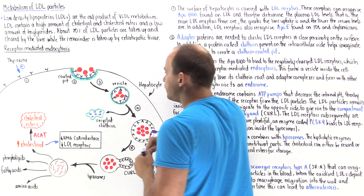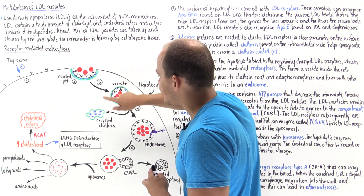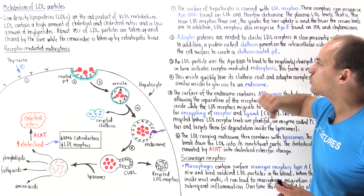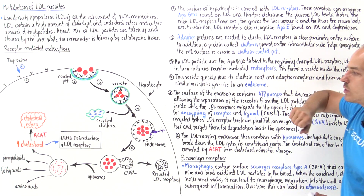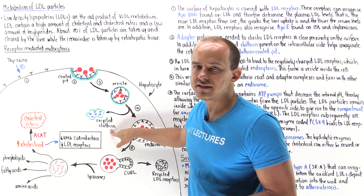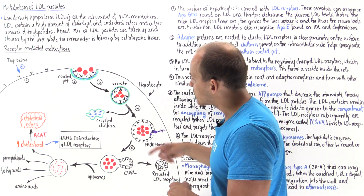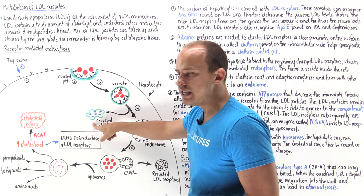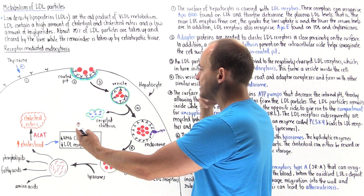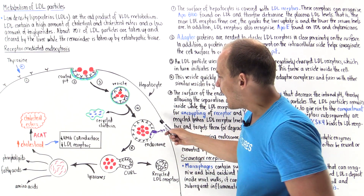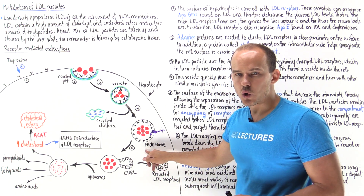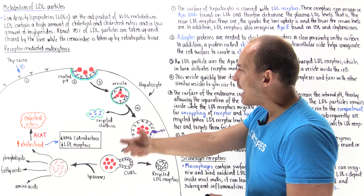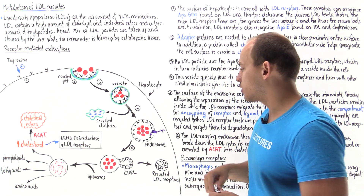We invaginate and form a vesicle. The first thing that happens is this vesicle loses all of these proteins — it loses the adapter proteins, it loses the clathrin — and all of these proteins can be recycled and reused by the cell. Once we form that naked vesicle without any of these proteins, that vesicle can fuse with other similar vesicles, and we give rise to an endosome. In the endosome, we have a bunch of these receptors that are bound to a bunch of these LDL particles.